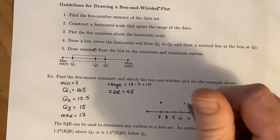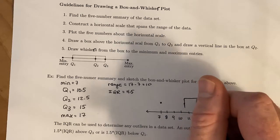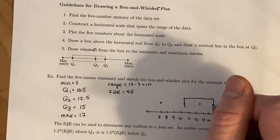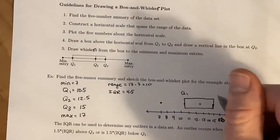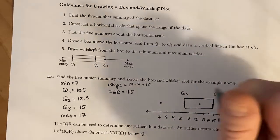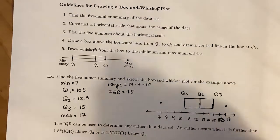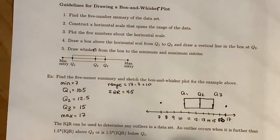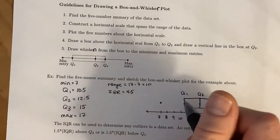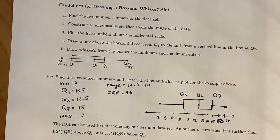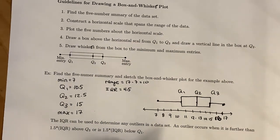Now what we do is we create a box from Q₁ over to Q₃. Here's Q₁, Q₃, and we cut that box at Q₂. Then we connect a whisker to the maximum value and a whisker to the minimum value. And that is our box-and-whisker plot.